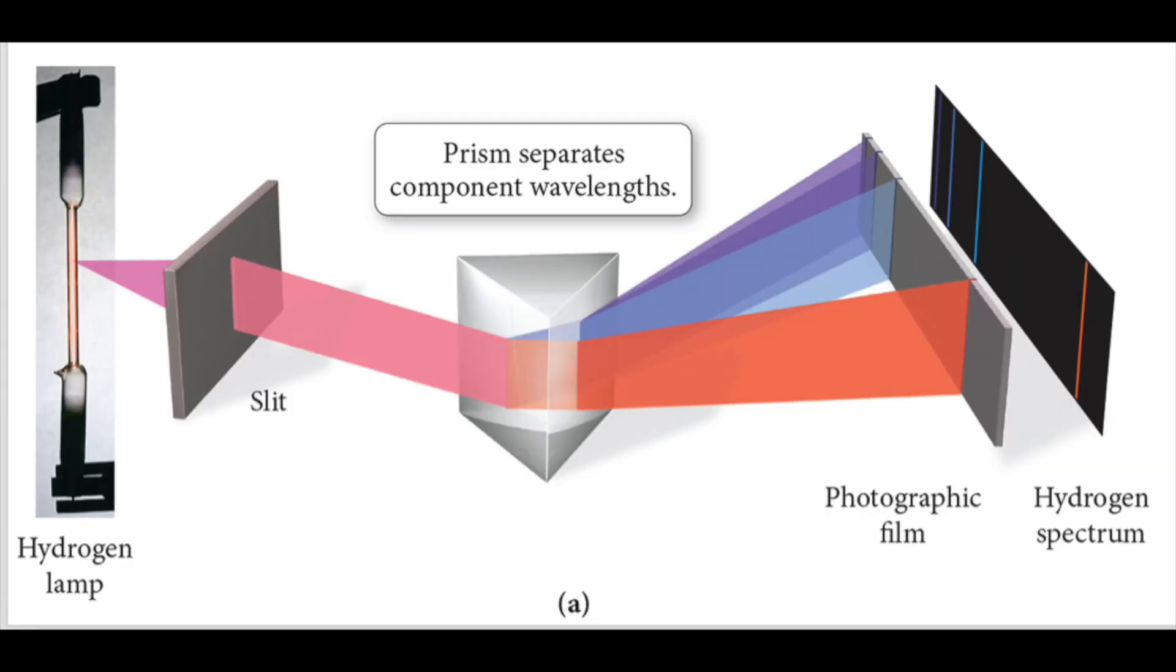You must be thinking at this point, why are the neon signs sometimes different colors? Well, this is due to the fact that different elements emit their own unique emission spectrum.